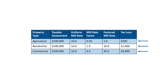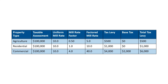Let's use another tax tool — the base tax — in our example. Suppose the municipality has a base tax of $2,000 for all commercial and industrial properties. The tax levy for the commercial property is now $6,000.